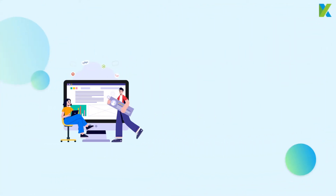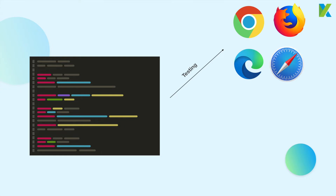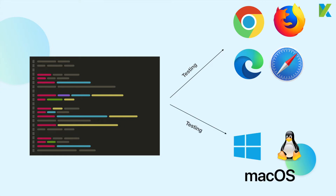Let's say your team develops a web application. Since different browsers and platforms have their own way to interpret code, you will have to test your application on different platforms to make sure it looks and behaves the way you want. You will need to test it with some of the most popular browsers like Chrome, Firefox, Microsoft Edge, and Safari, and operating systems like Windows, Mac OS, and Linux. Even more carefully, you will need to test with different versions of browsers. These tests will take a huge amount of time, especially if you don't have enough resources or do it manually.